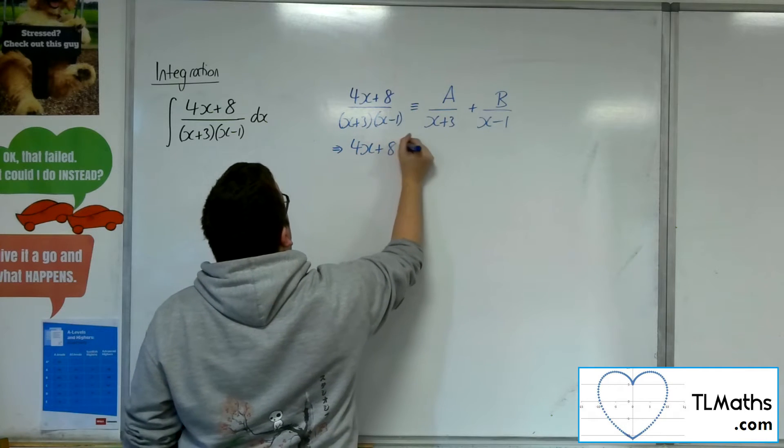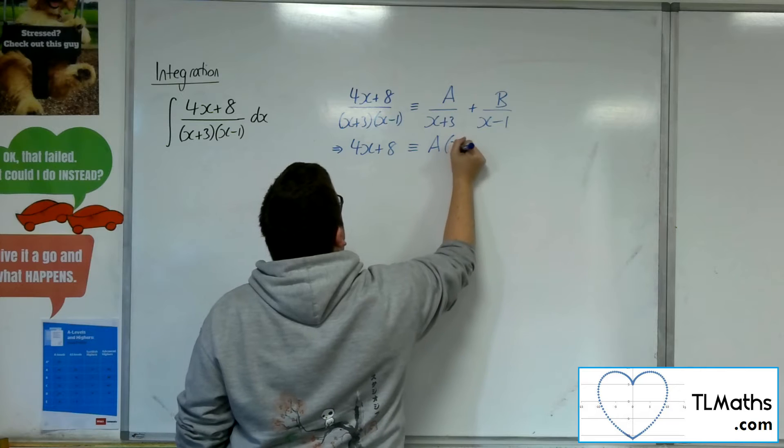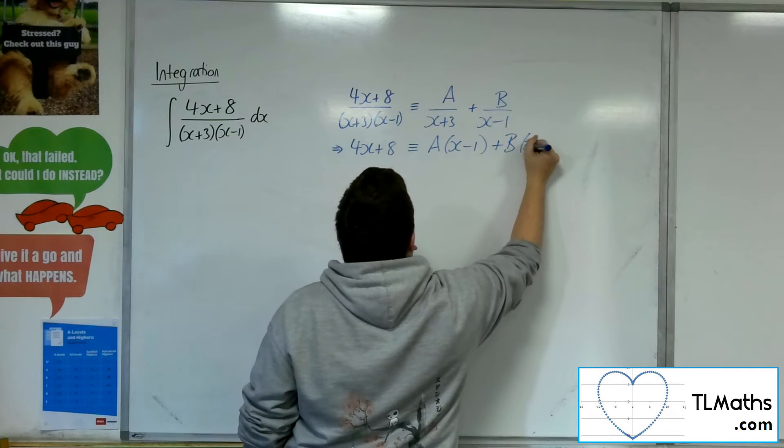So 4x plus 8 will be equivalent to A times (x minus 1) plus B times (x plus 3).